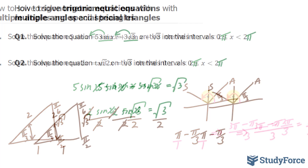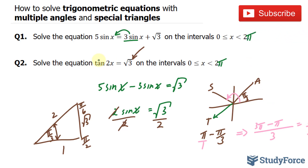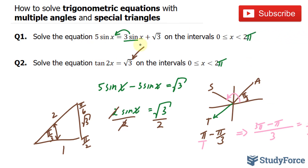In question 2, we have tangent 2x is equal to the square root of 3. Our ratio is positive, and tangent is positive in quadrant 1 and quadrant 3, so we have to find the angle in both the first and third quadrants. Notice that our angle is a double angle — we have 2x as opposed to just x in example 1, so keep that in mind when we find our angle.